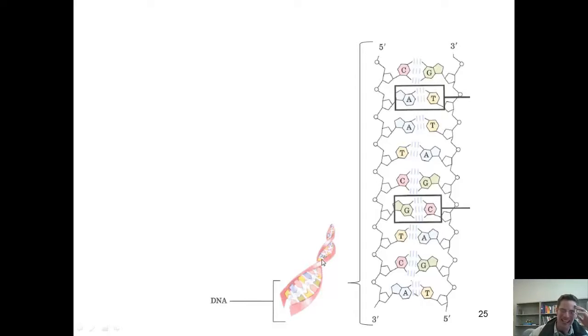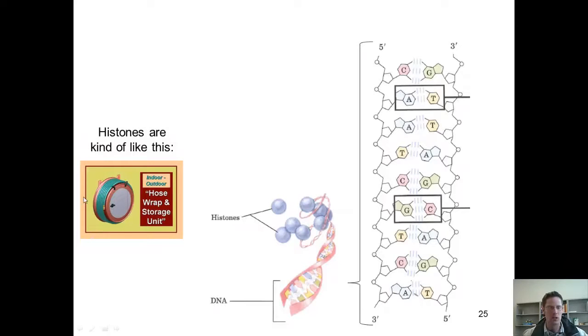Now, our cells package DNA by wrapping it around special proteins called histones, which act kind of like a wheel that we might use to wrap our garden hose around at home. These histones, in turn, are clustered together in groups called nucleosomes.